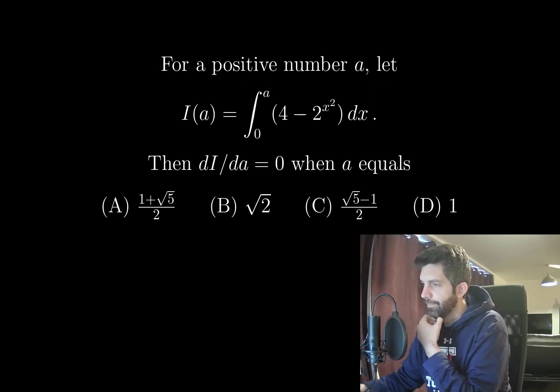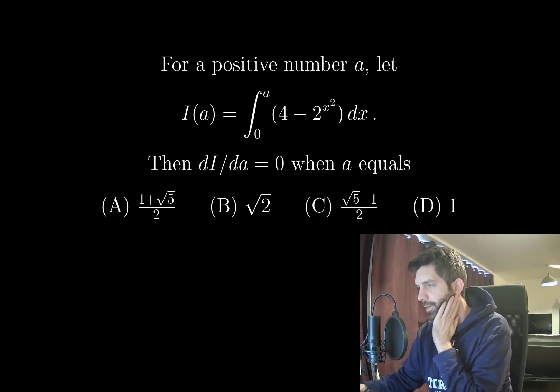For a positive number a, let I(a) be equal to the integral from 0 to a of 4 minus 2 to the x squared dx. Then dI/da equals 0 when a equals, and we have these four options here.